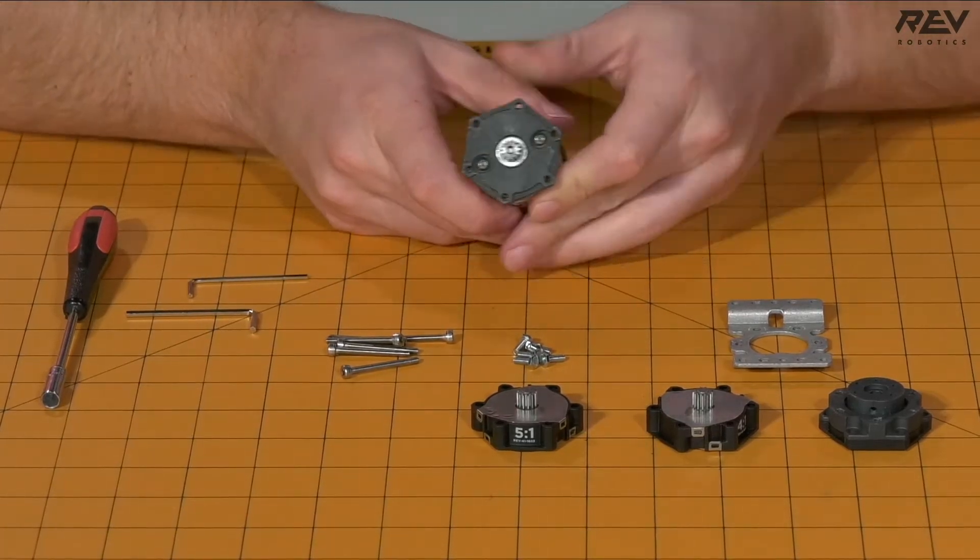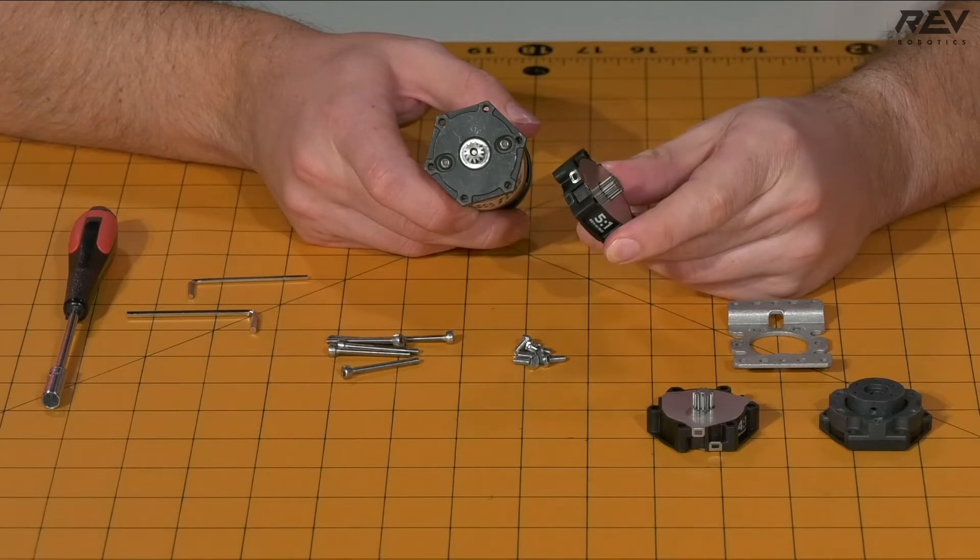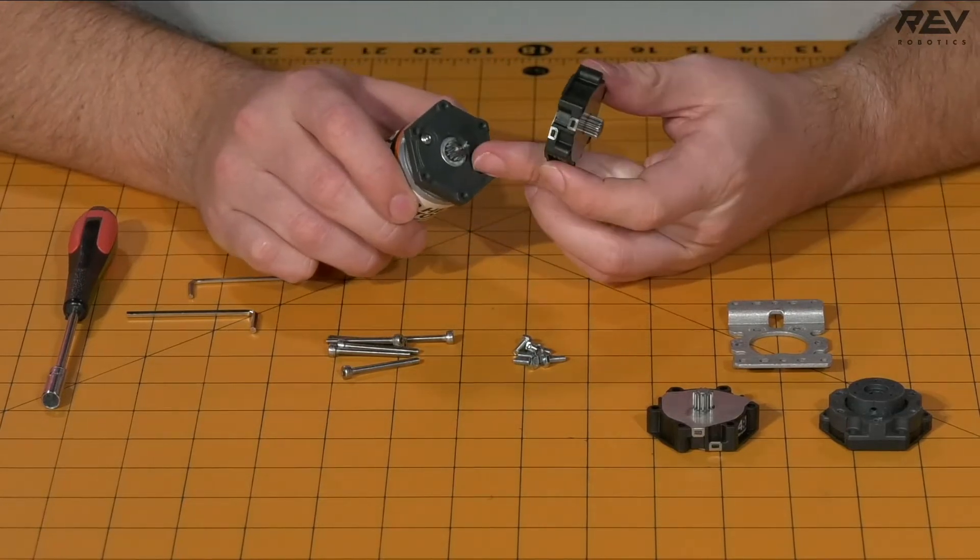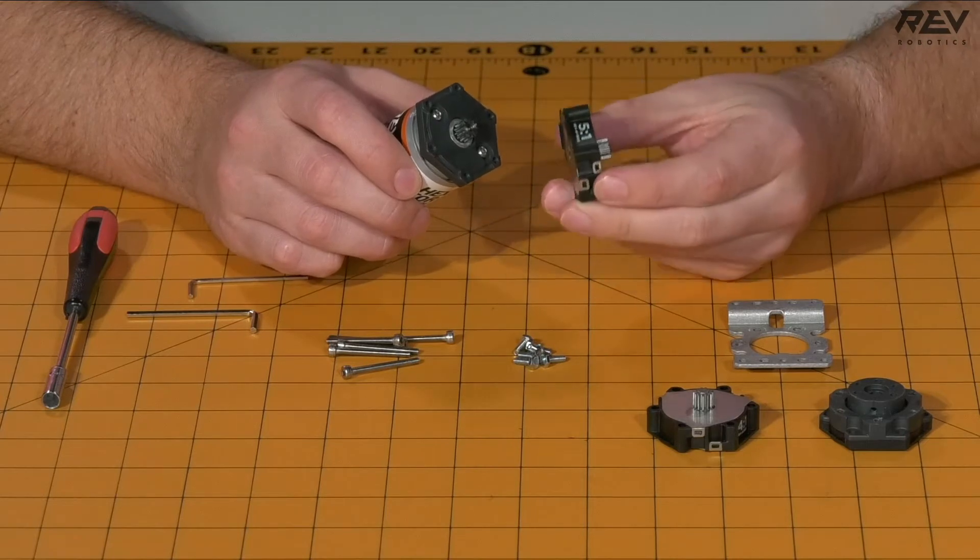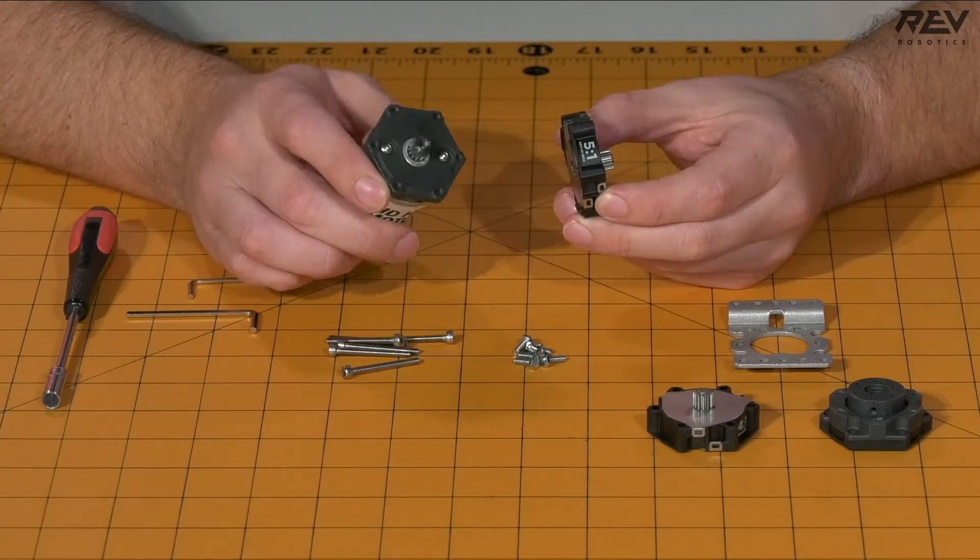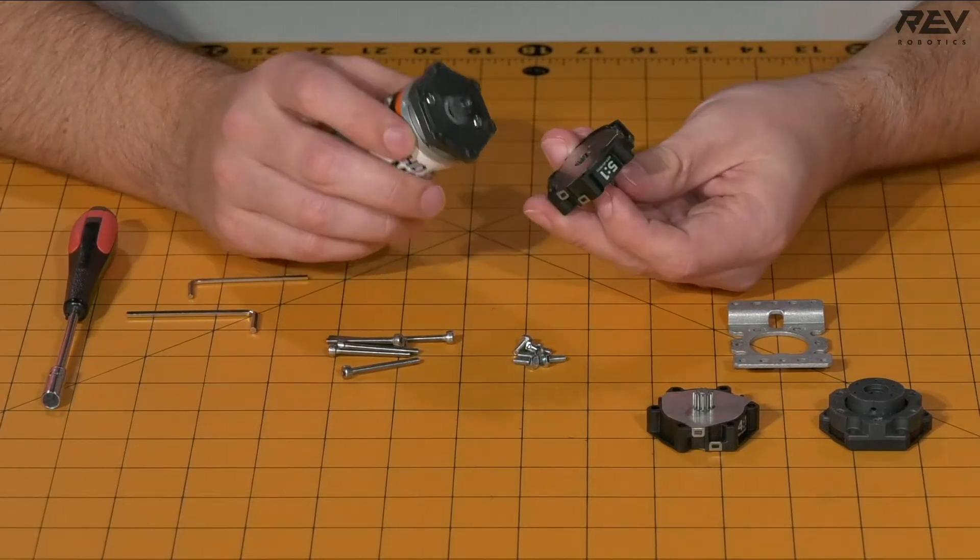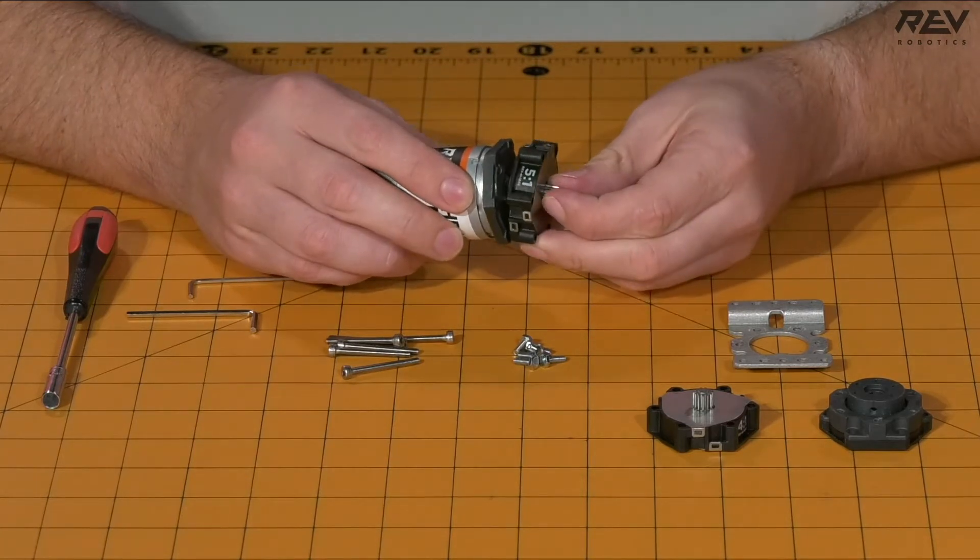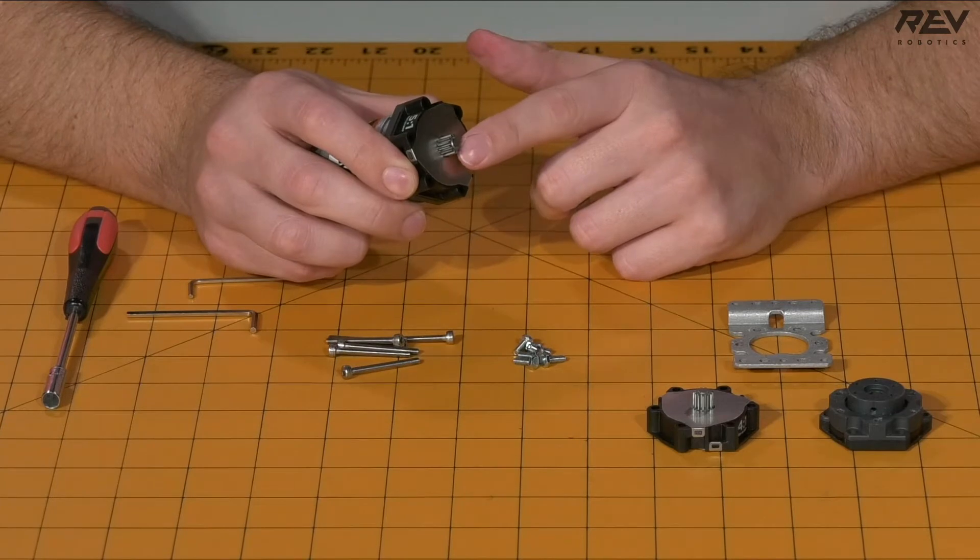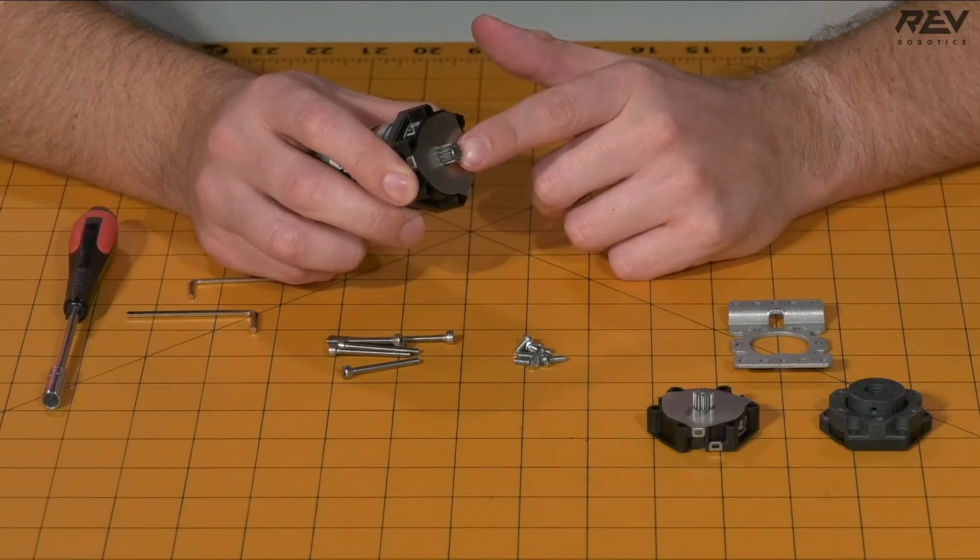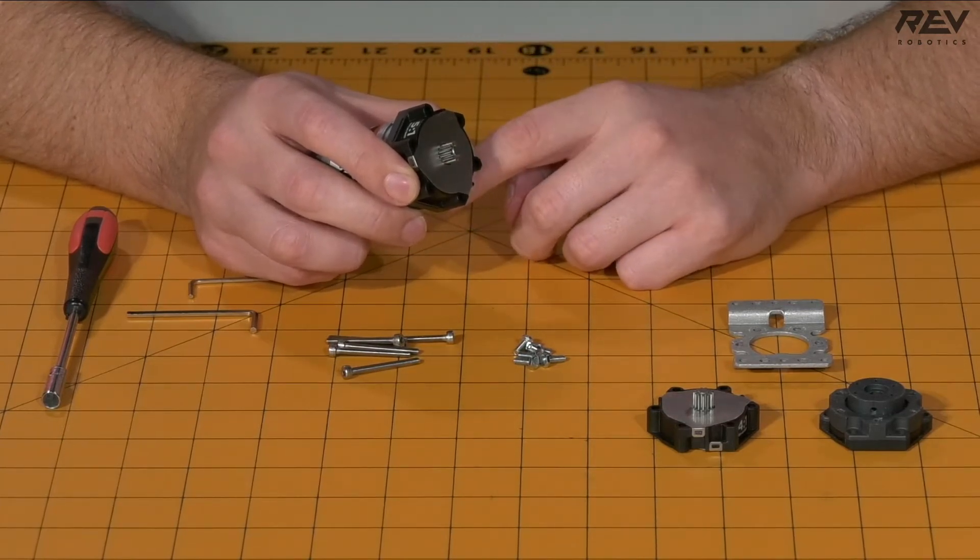Now, once those are tightened down, you're going to want to take your 5-to-1 cartridge and put it onto the pinion of the motor itself. Note that you're going to always want to put the higher gear ratio the closest to the motor as you can. So to do this, we're going to try to align the pinion with the cartridge itself. It is usually helpful to hold onto the end of the cartridge as you're placing it onto the motor.